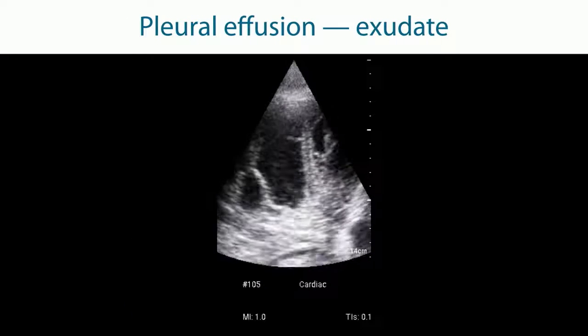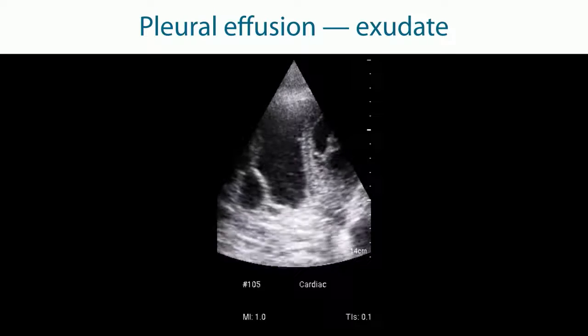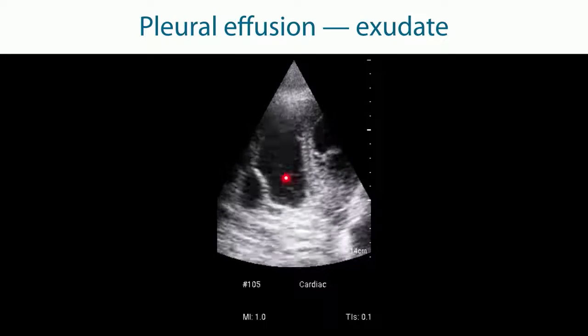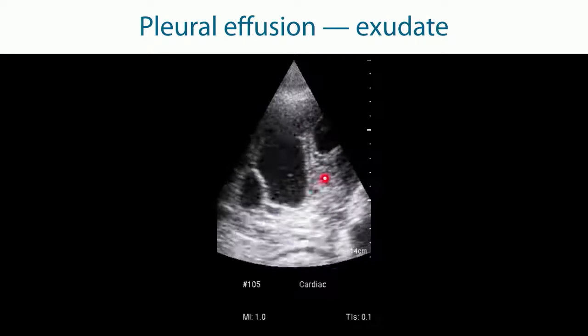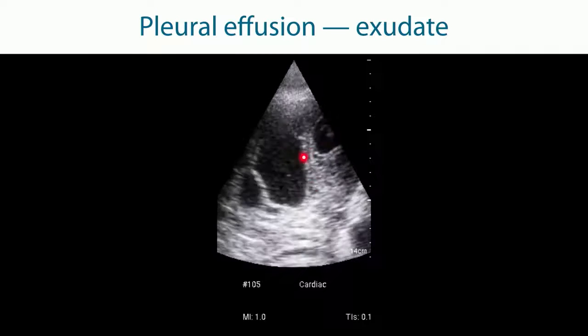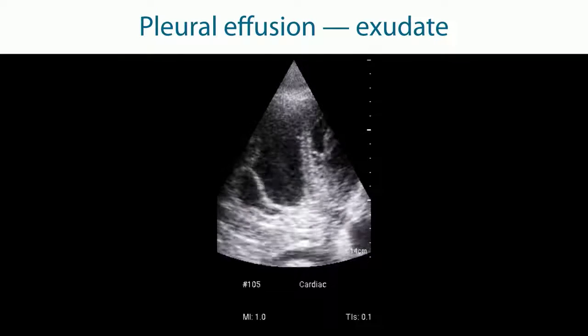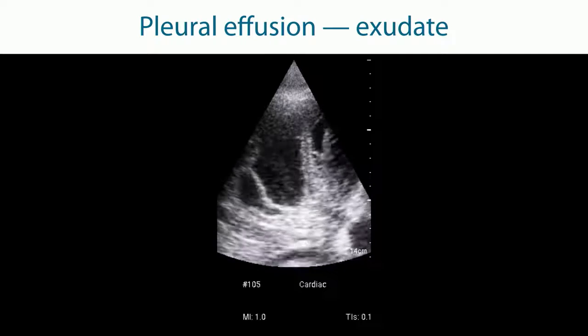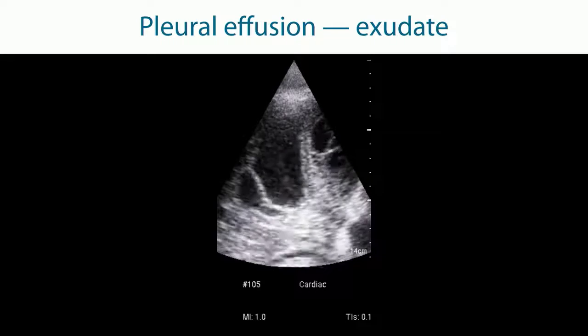Whereas in this example the pleural effusion looks entirely different. What can we see here? We see black areas over here but we see this white hyperechoic lines which are sometimes moving. This is a so-called exudate. So this is suggestive of a bacterial infection. Right so what you're seeing here is fibrin basically. You see that there is probably some form of hemorrhagic infectious material inside.